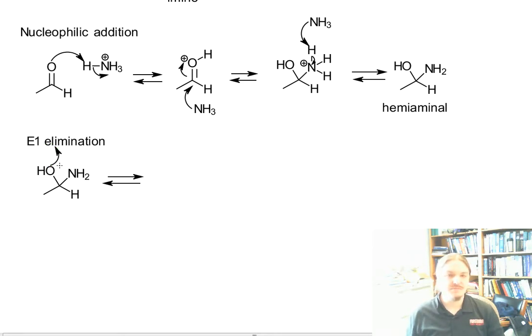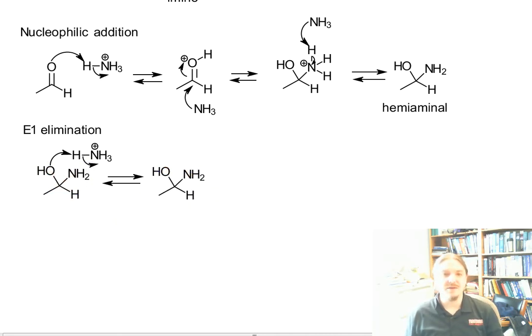Step one, proton transfer. The, we need the leaving group to be a better leaving group. There we go. And copy hemiaminal. Leaving group. Step two, loss of leaving group. Forward, reverse. Leaving group's gone.